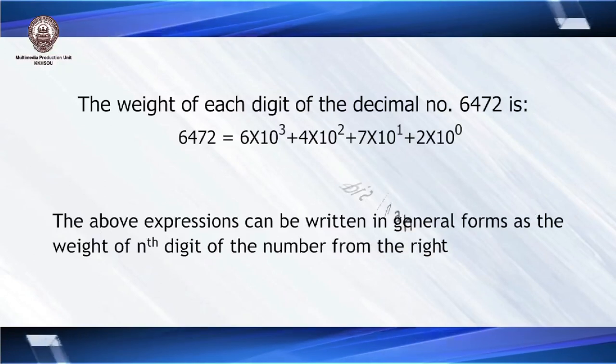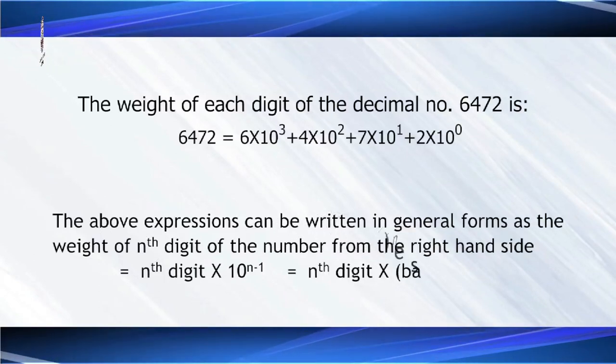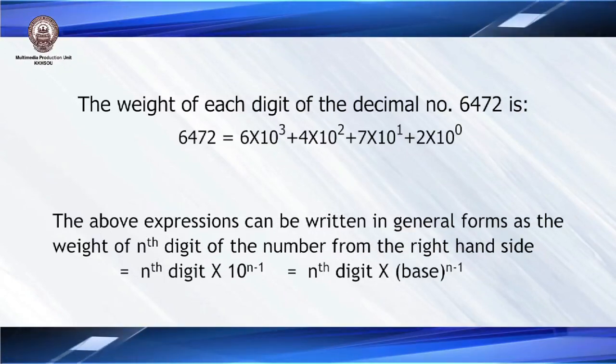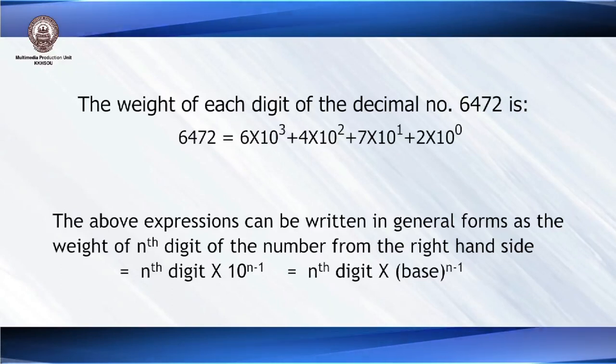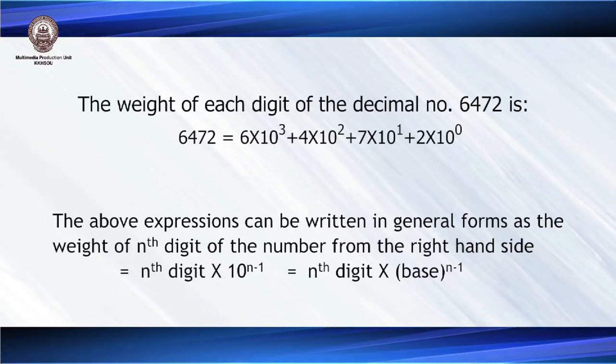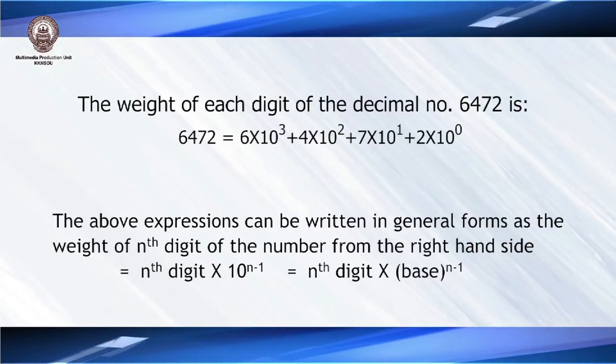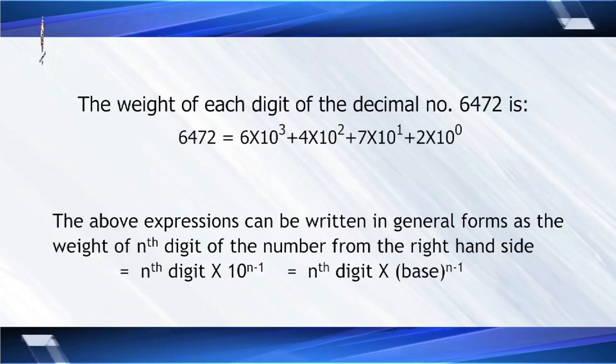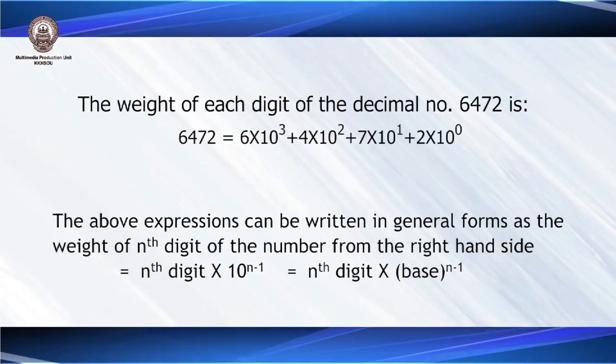Using this derivation, we get a general formula: the nth digit multiplied by the base to the power of n minus 1. This works not only for the decimal number system, but also for binary and other number systems.